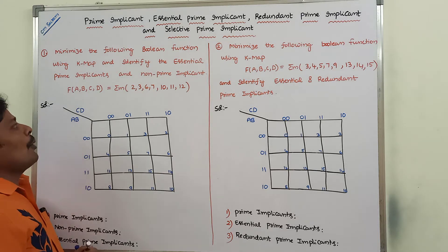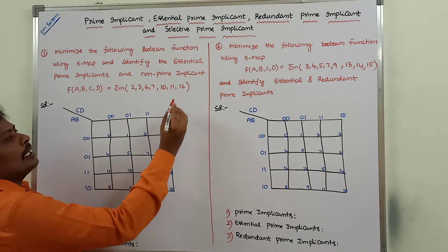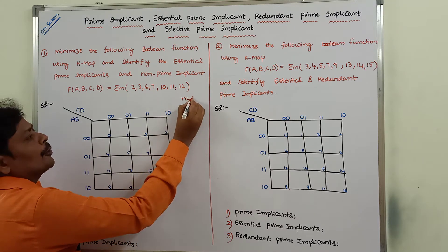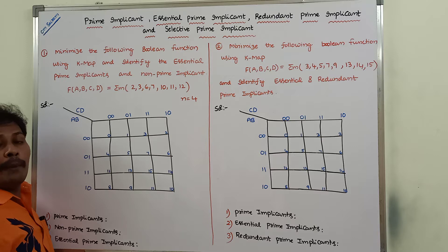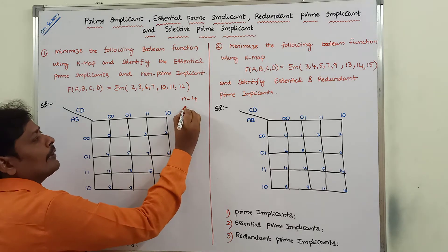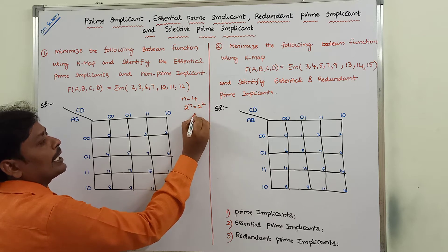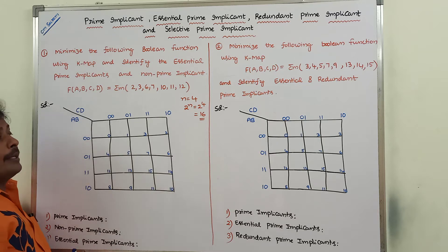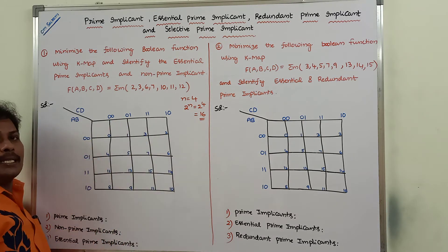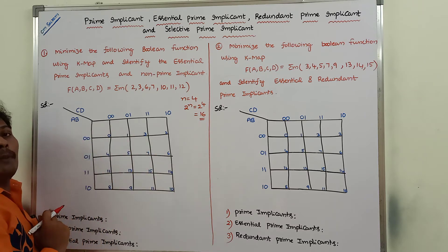Here there are four variables, so n is equal to 4. The four variables are a, b, c, and d. Hence, we have to use a four-variable Karnaugh map. The four-variable Karnaugh map contains 2 to the power n cells. With n equal to 4, that is 16 cells. This is the structure of the four-variable Karnaugh map.